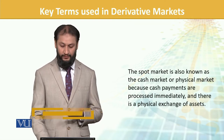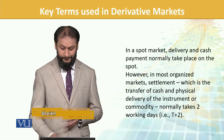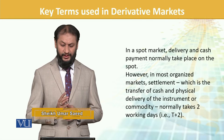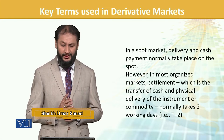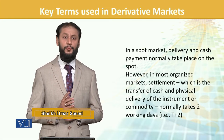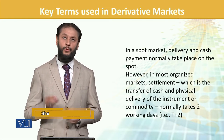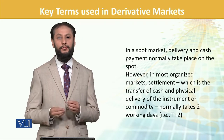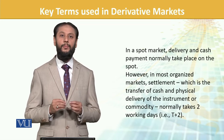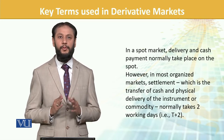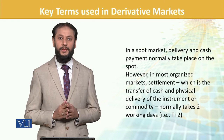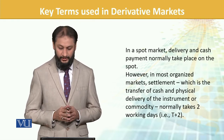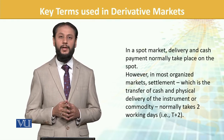In the spot market, delivery and cash normally take place on spot. However, it is not necessarily at the exact same instant — there can be some transaction lead time. For example, specifically in the stock market, transactions can be T+1 or T+2, meaning settlement is done after one or two days.